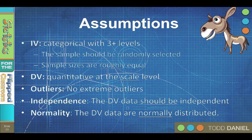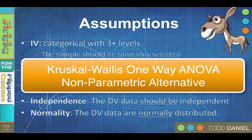If the dependent variables are not normally distributed, or if the sample sizes are not roughly equal, use the non-parametric Kruskal-Wallis one-way ANOVA test.